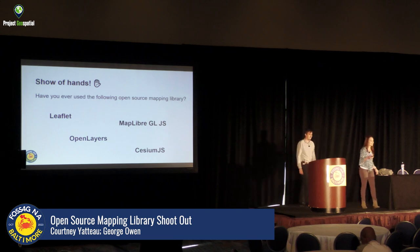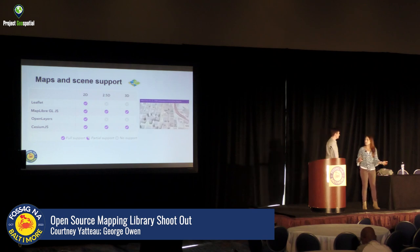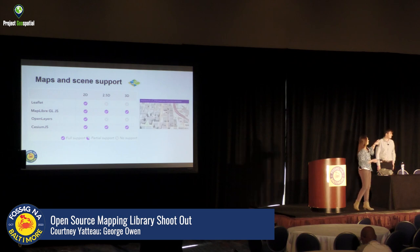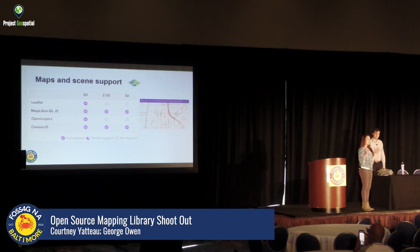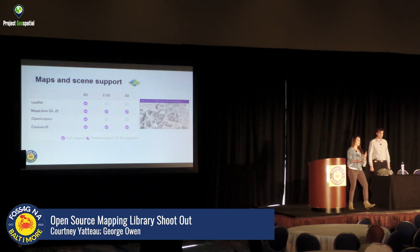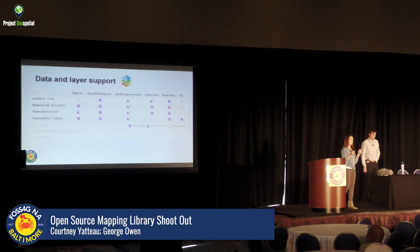Looking at map and scene support, all four libraries support 2D maps. We have a GIF of 2.5D map styling — if you're not familiar, it represents 3D buildings and terrain in a way that provides a sense of depth and elevation while primarily still being a 2D representation. 2.5D is supported with MapLibre and Cesium JS, along with full 3D support.